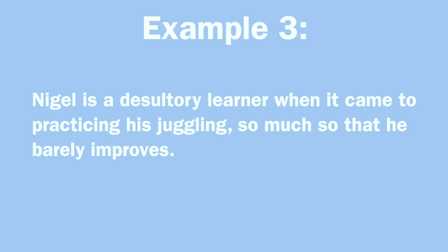Example 3: Nigel is a desultory learner when it comes to practicing his juggling, so much so that he barely improves.